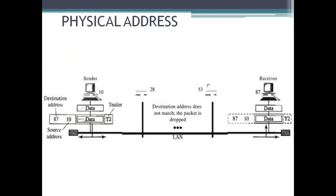For example, a node with physical address 10 sends a frame to a node with physical address 87. The two nodes are connected by a link. At the data link layer, this frame contains the physical address in the header — these are the only addresses needed. The rest of the header contains other information needed at this level, and the trailer usually contains extra bits needed for error detection.